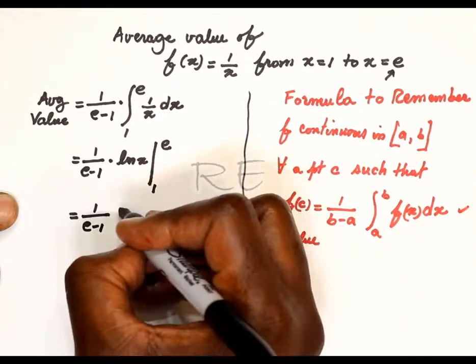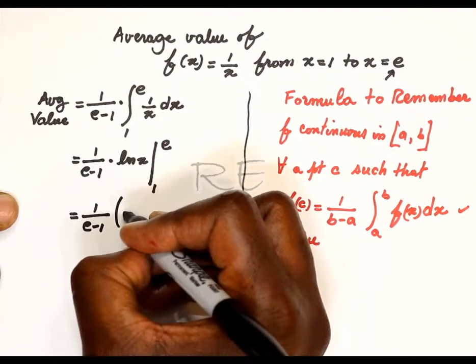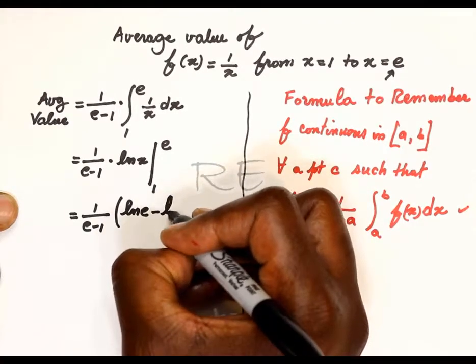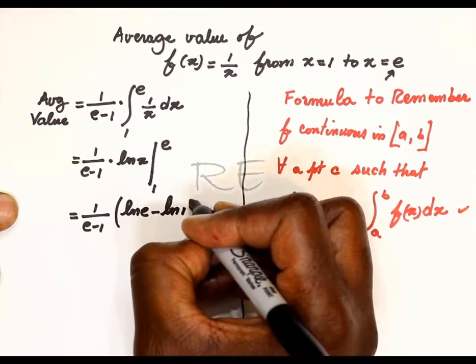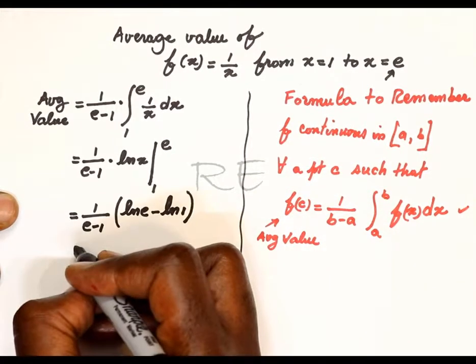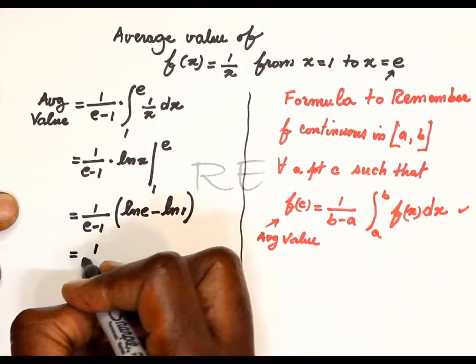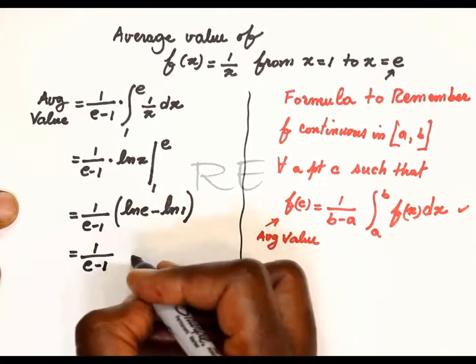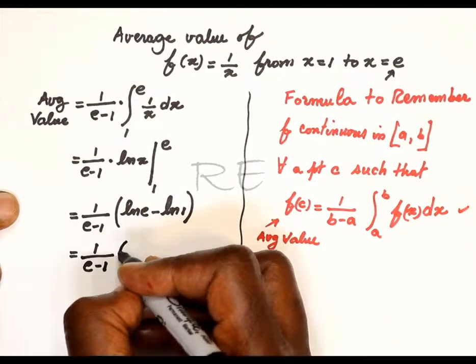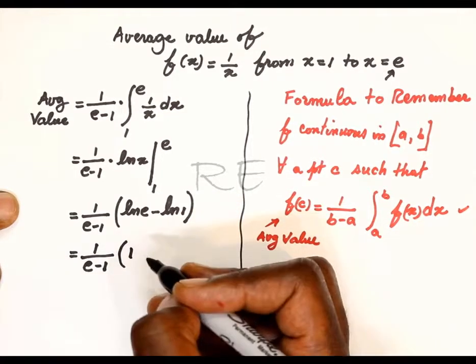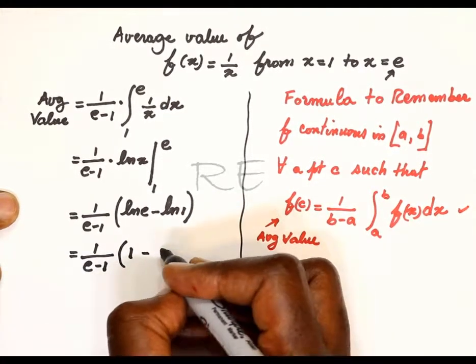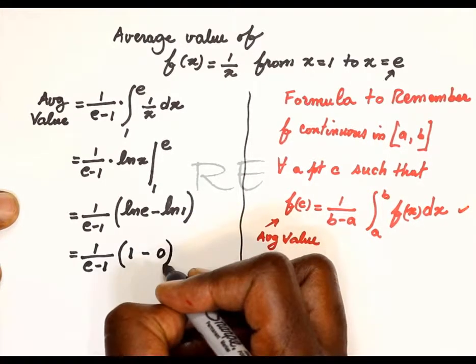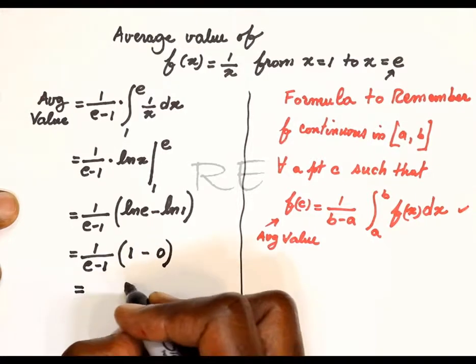1 over e minus 1 multiplied by ln e minus ln 1. Now, ln e means log e of e. To what power should I raise e to get e? It's 1. To what power should I raise e to get 1? It's 0.